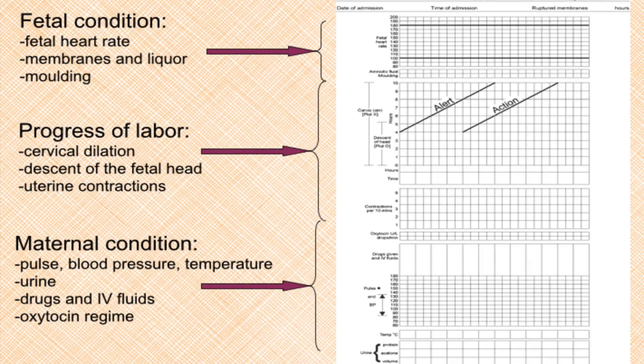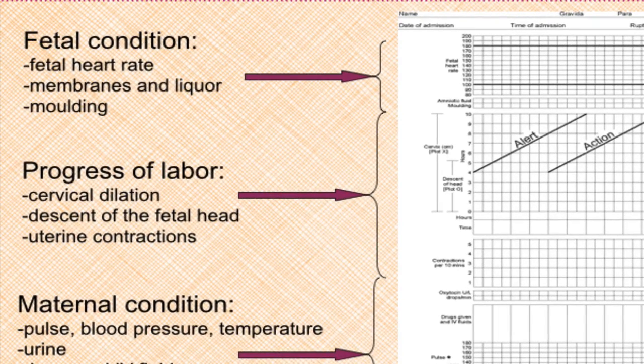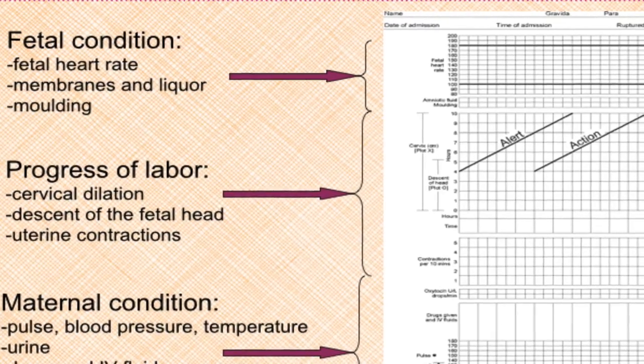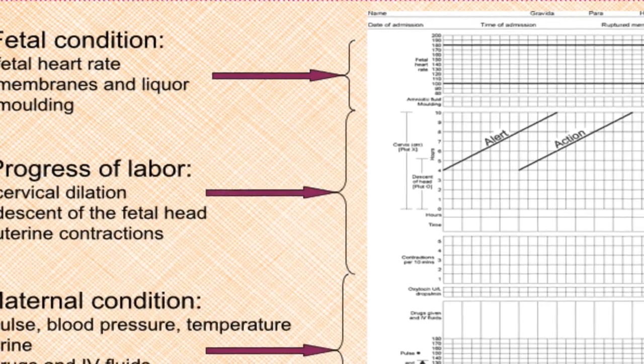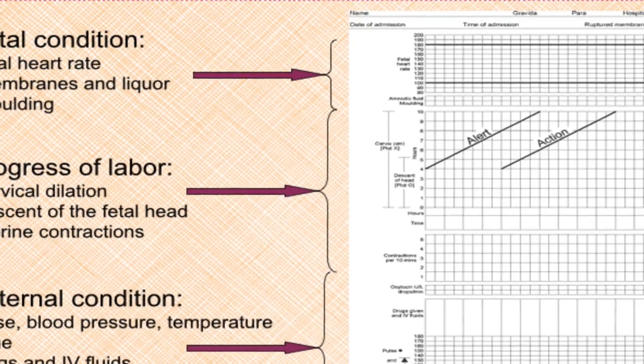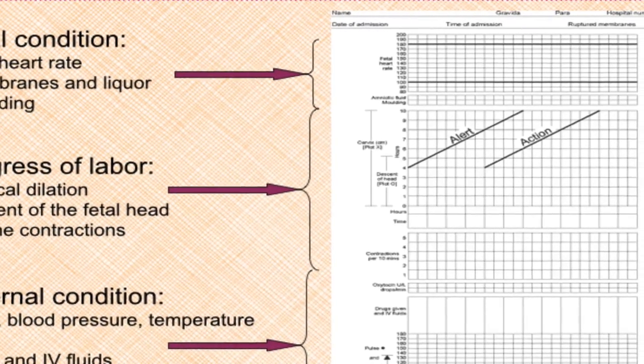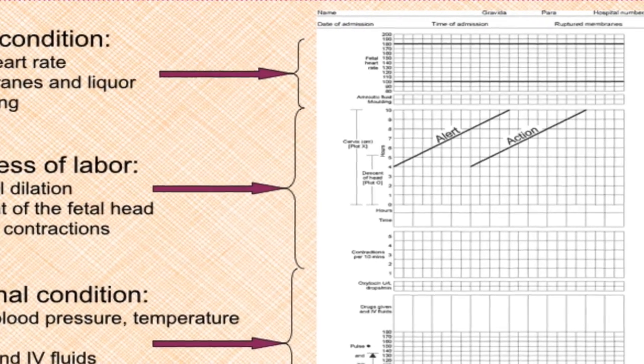WHO partograph has three components. At the top, fetal condition is recorded. It comprises fetal heart rate, membranes, their presence and absence, liquor color, and molding of fetal skull.